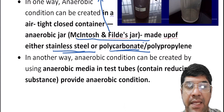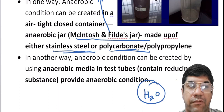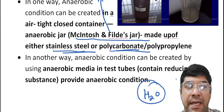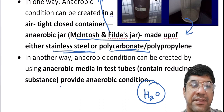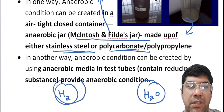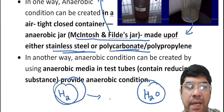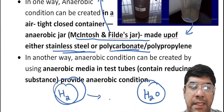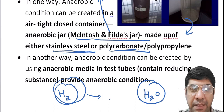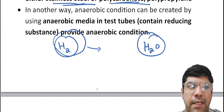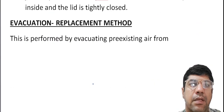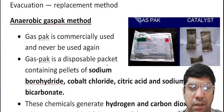The catalyst in the jar lid helps to promote the recombination of the generated hydrogen gas with any residual oxygen present in the jar. Once the gas generating pack is activated and the jar is sealed with the lid, the environment inside the jar becomes anaerobic. The hydrogen gas is produced to create a vacuum inside the jar, so bacteria that require anaerobic conditions can be cultured inside.